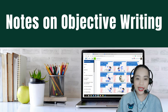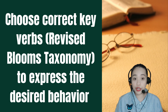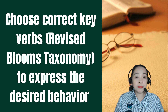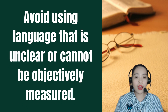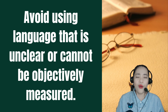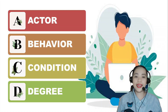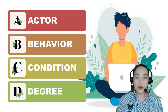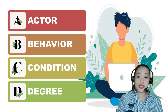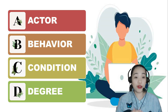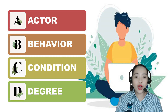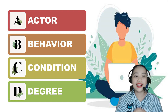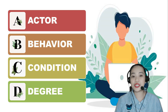Remember, in objective writing you need to choose correct key verbs under Revised Bloom's Taxonomy to express the desired behavior. Also avoid using language that is unclear or cannot be objectively measured. The ABCD model — four easy steps for building a learning objective that includes all the information needed. Create learning objectives following this model and you'll have a solid blueprint of your learning assessments, learning content, learning activities, and learning evaluations as well.